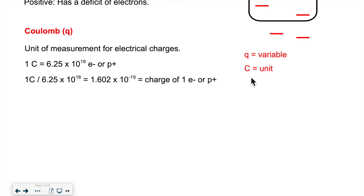So the coulomb is a unit of measurement for electrical charges. In one coulomb, there are 6.25 times 10 to the 18 either electrons or protons, depending on the situation we're looking at. Now, what is the charge of one particle? To find that, we take one coulomb divided by the number of particles it represents, to bring it down to one particle.